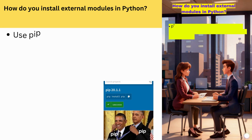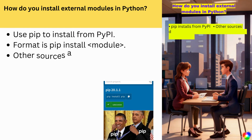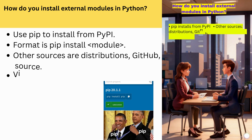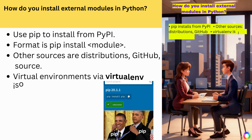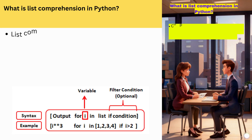How do you install external modules in Python? Use pip to install from PyPI. Format is pip install module. Other sources are distributions, GitHub, and source. Virtual environments via venv isolate module versions.